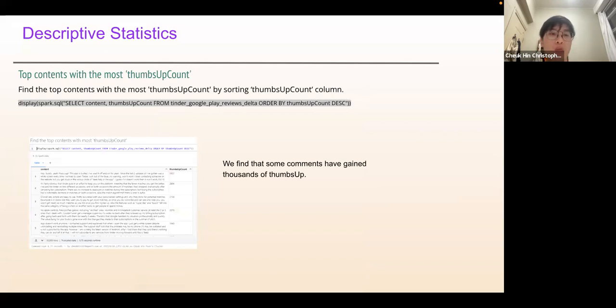We find the top content with the most thumbs up count by sorting the column. Some comments have gained thousands of thumbs up. For example, the top five comments have gained more than or about 2,000 thumbs up.